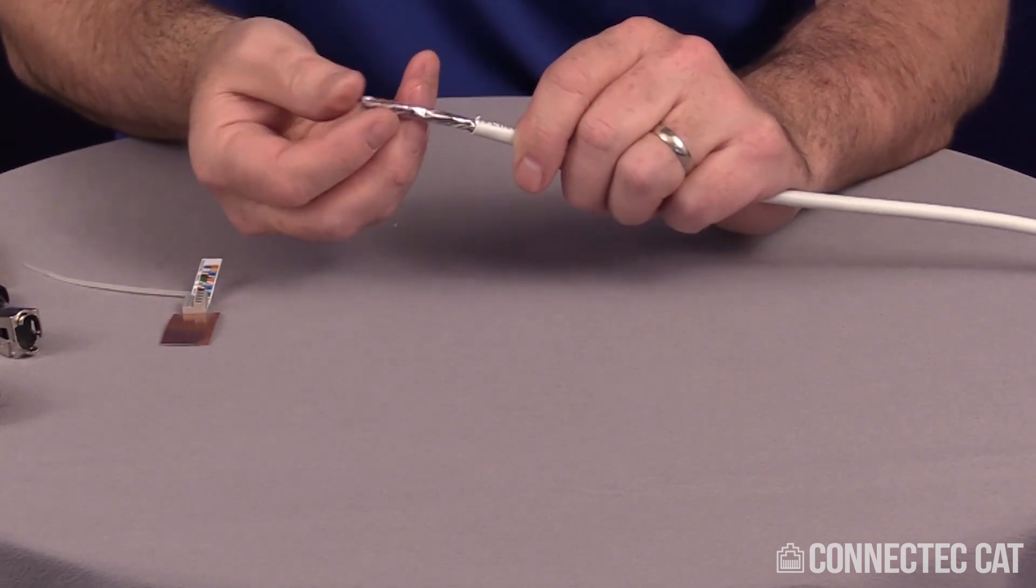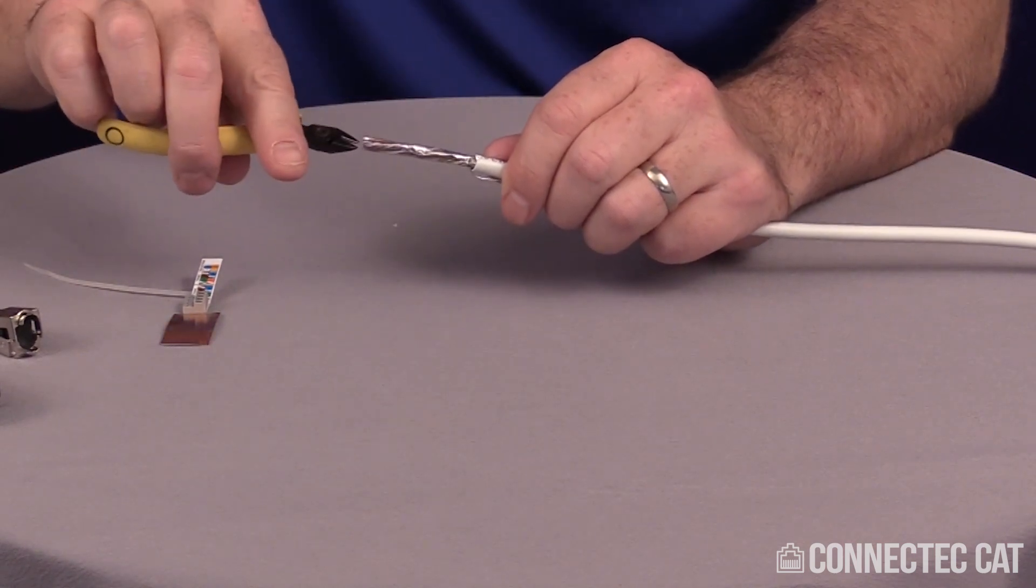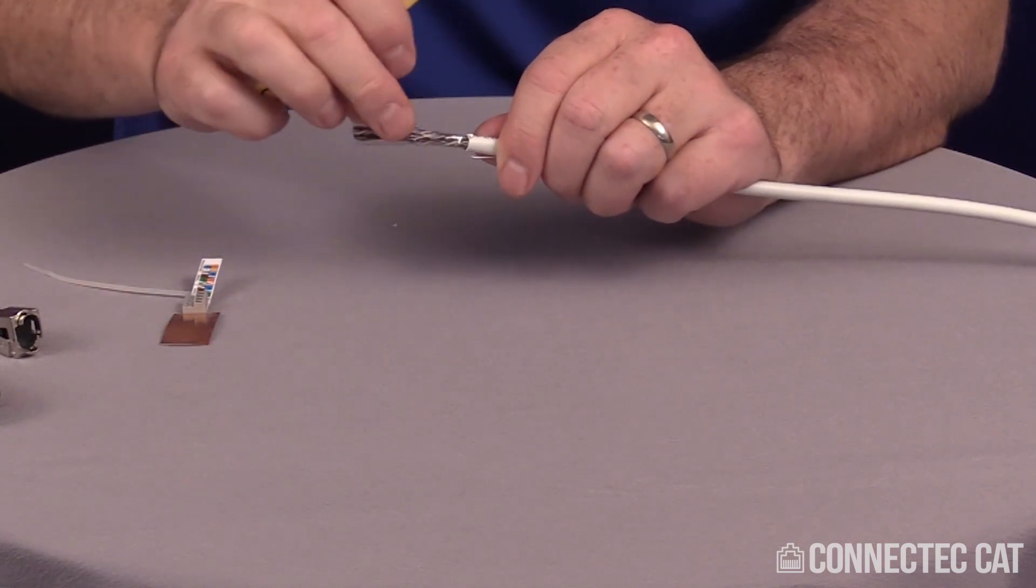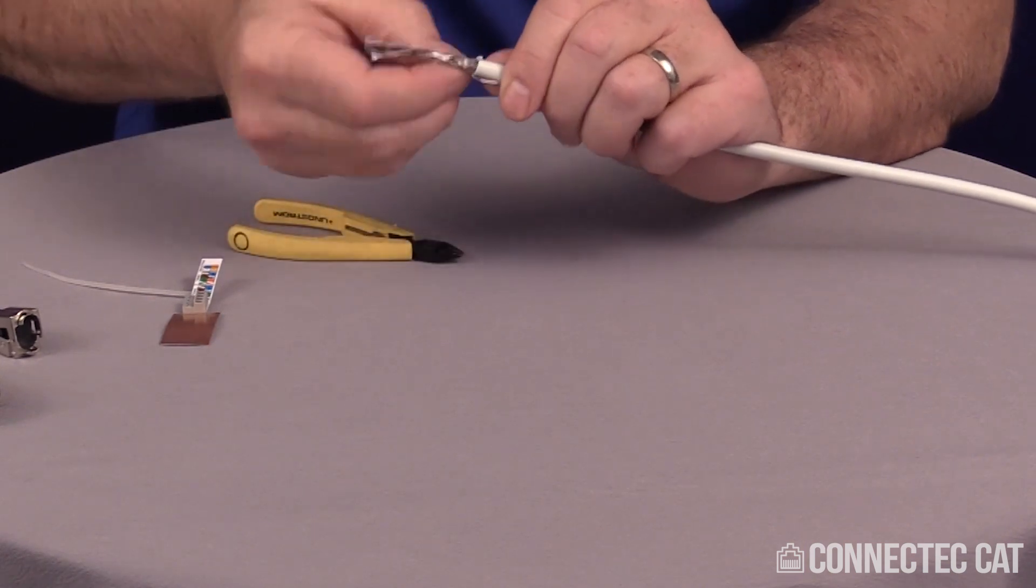Find your drain wire and fold it back. Do not cut it off. Now remove your polyester binder, this clear binder here. Find the seam on that one also, follow it down to the jacket, nip it, and it'll come right off.